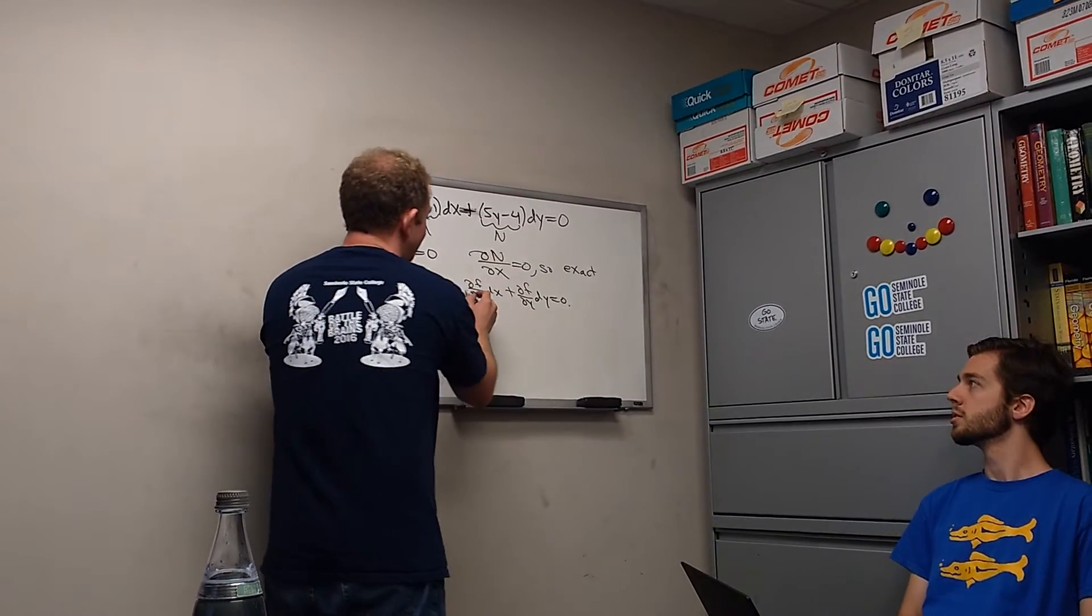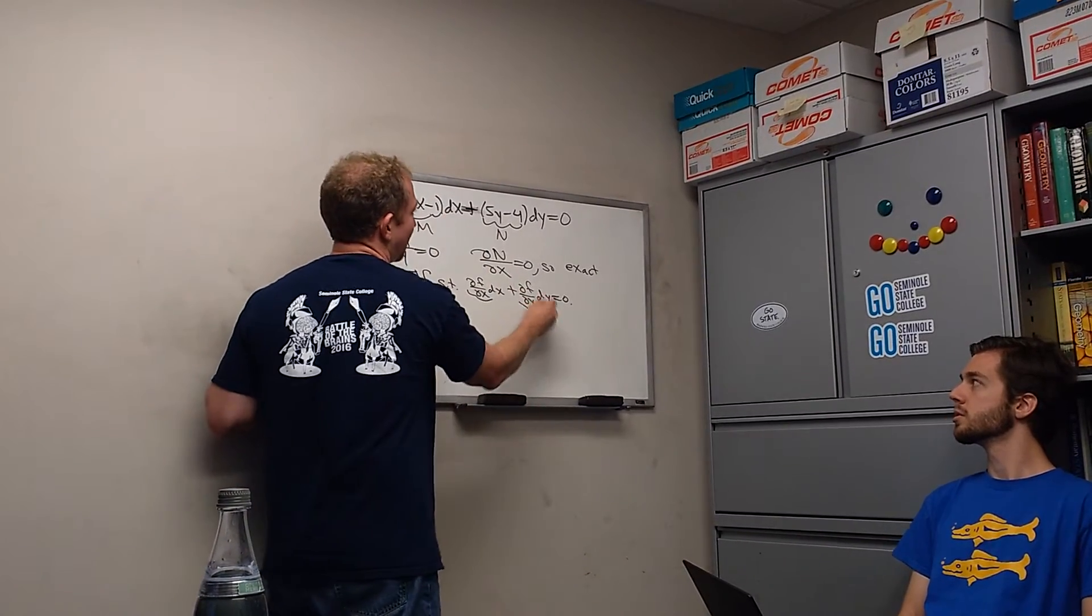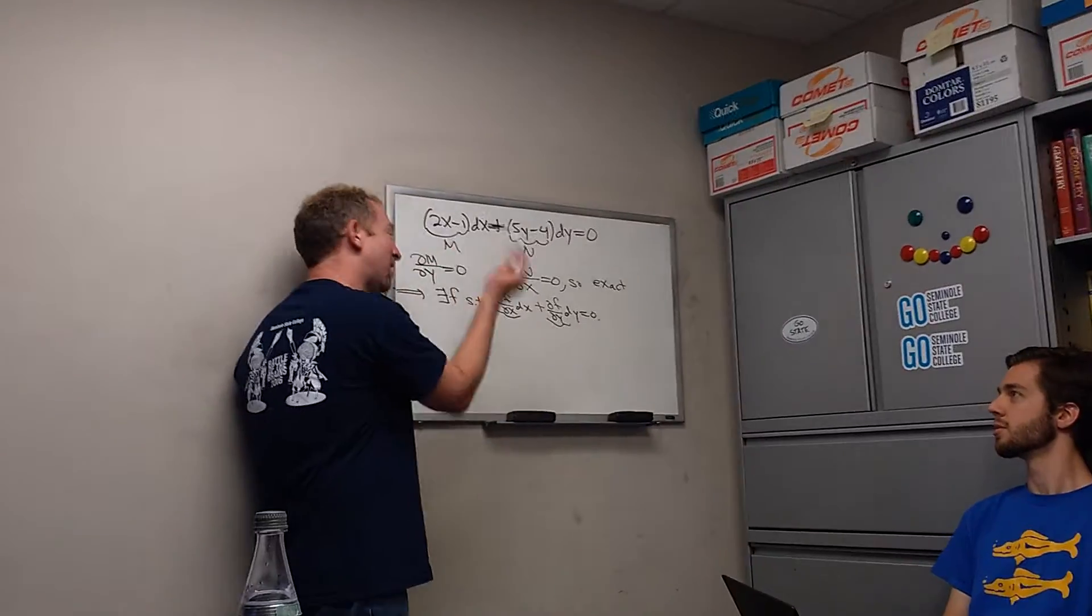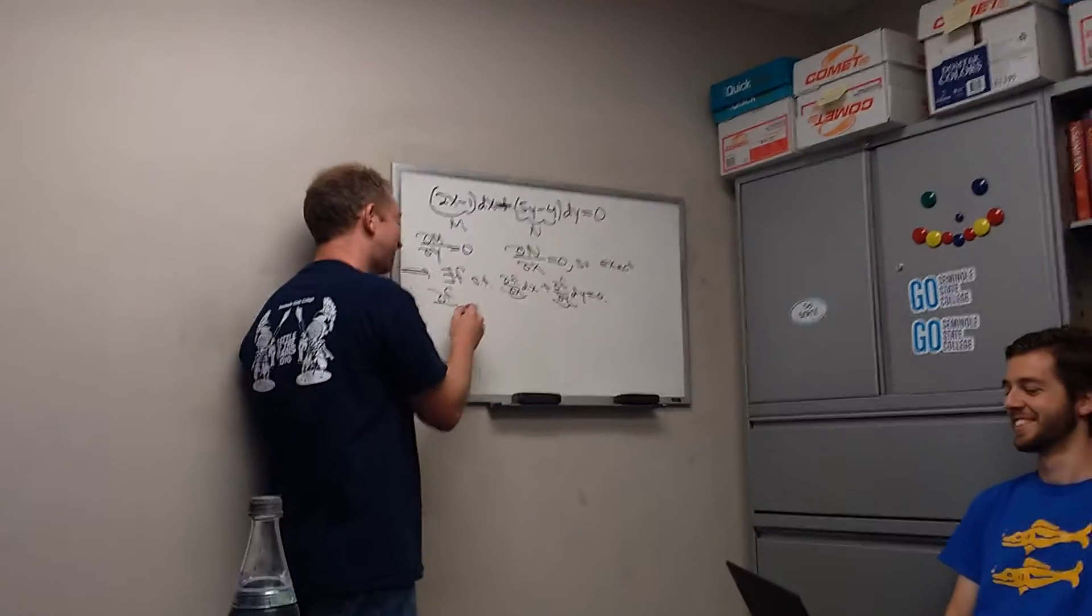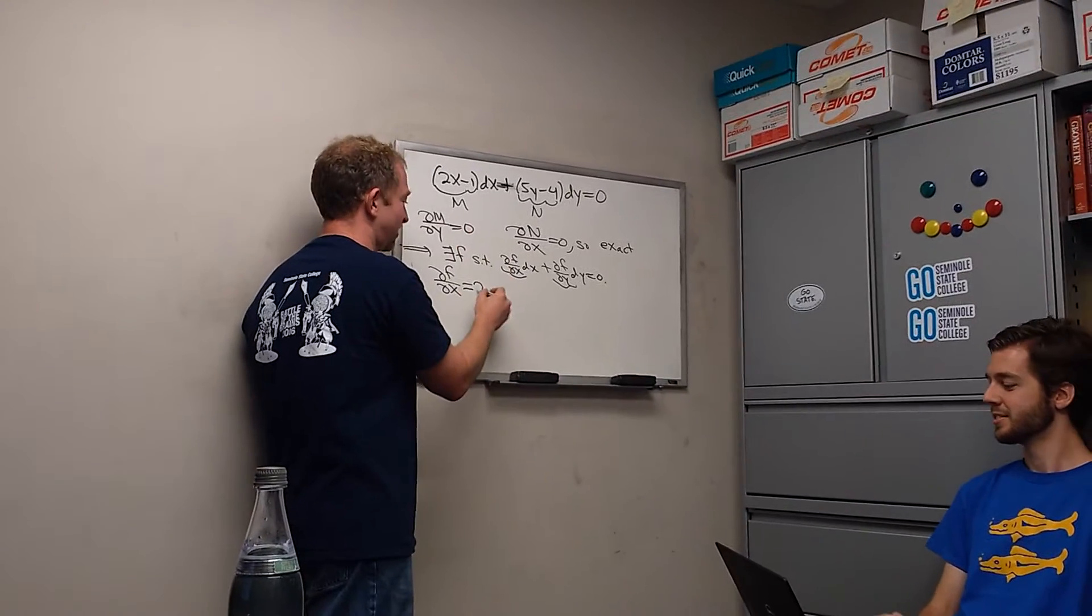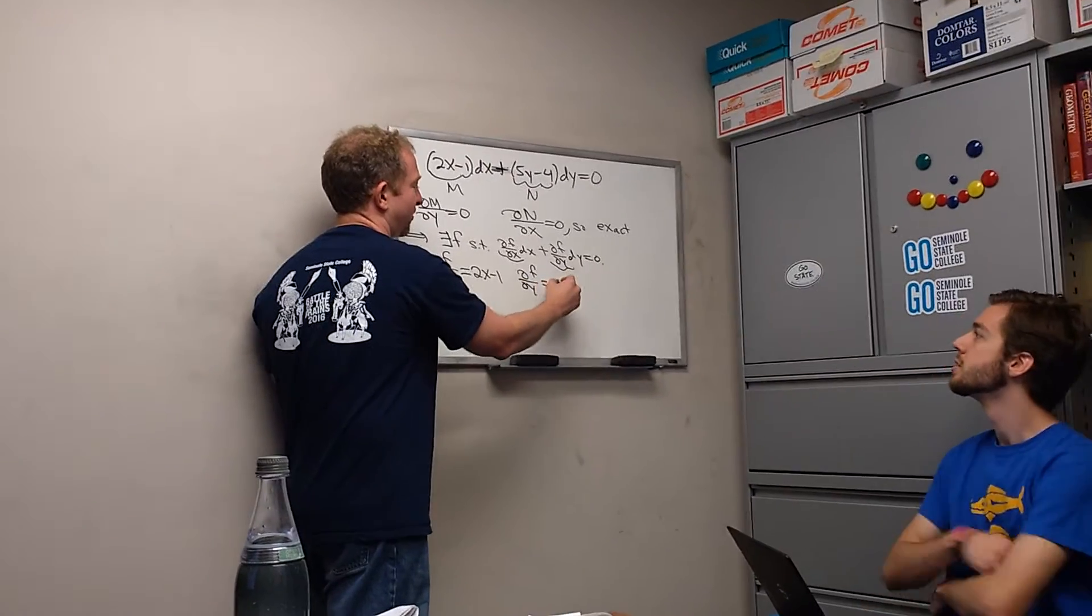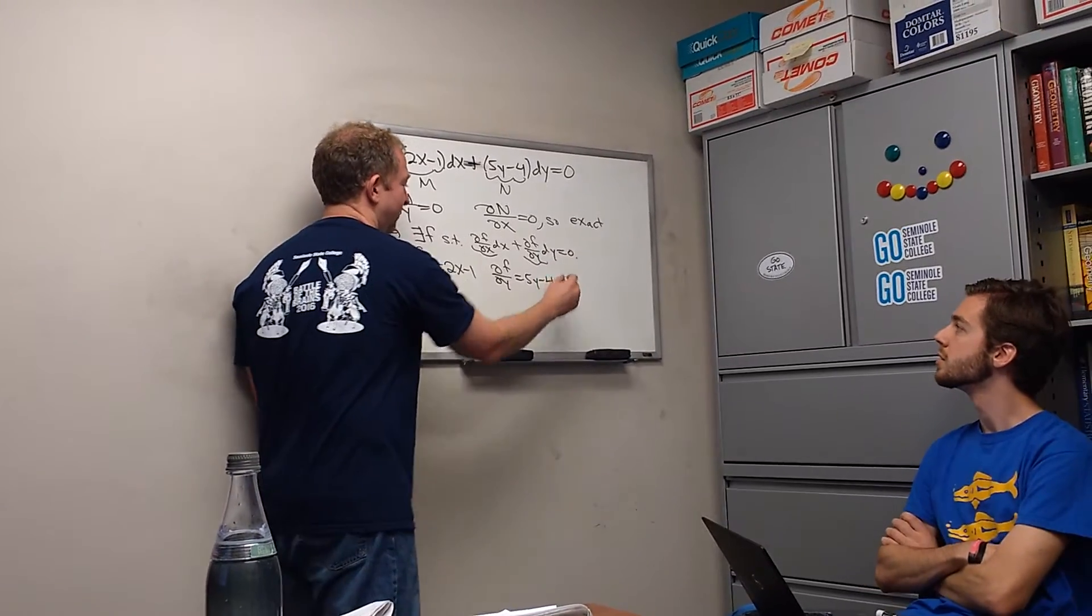del f del y dy is equal to 0. And it's equal to this. That means that del f del x is this, and del f del y is this. Good memories, huh, Carlos? Is that the answer? No. No, no. You're out of one. So I'll do another one after this. Del f del x is 2x minus 1, and del f del y is 5y minus 4. Good stuff.